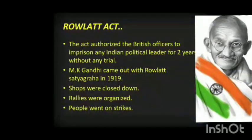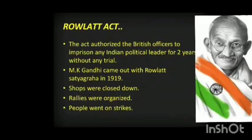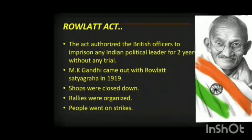The Rowlatt Act was passed in 1919, right after the end of the First World War. It gave the government enormous powers to detain political prisoners without trial for two years. Gandhiji declared a civil disobedience movement against such unjust laws, which would start with a hartal on 6th April.